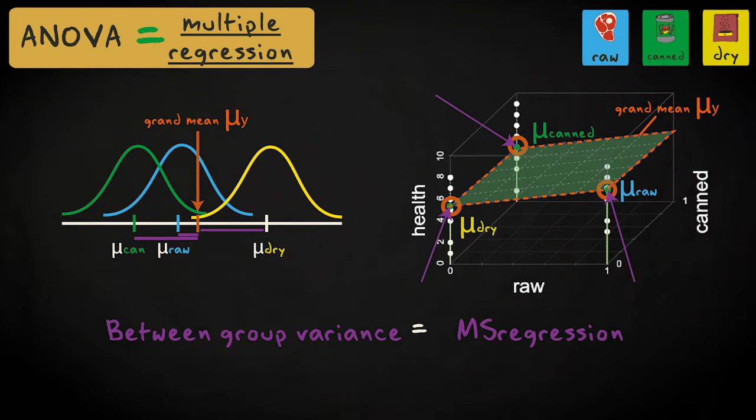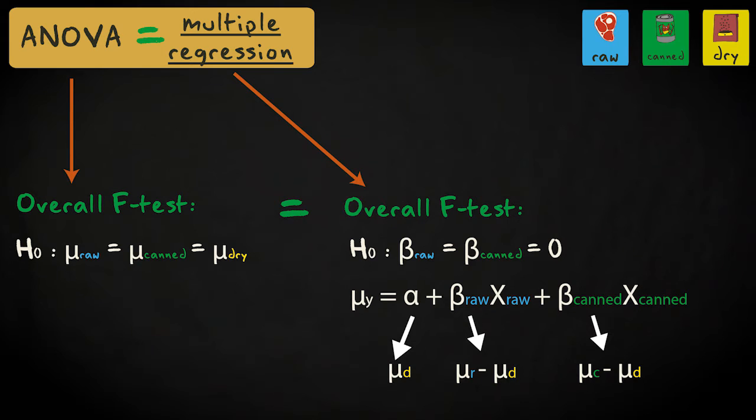Of course, the individual t-tests of the regression coefficients do not necessarily correspond to the post-hoc comparisons in analysis of variance. But the overall f-test in regression and the f-test in analysis of variance are not just similar, they are the same.